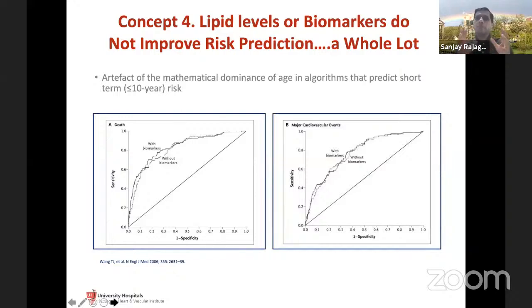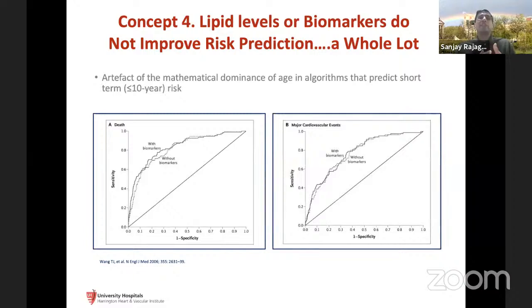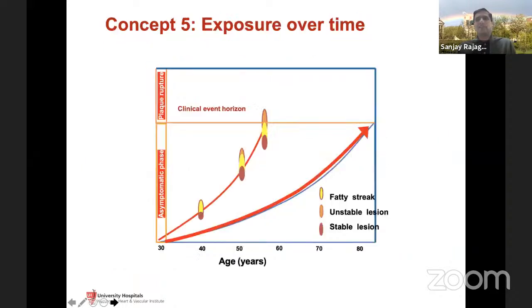The fourth concept: biomarkers don't make a huge difference. Whether you use five, six, or ten biomarkers — looking at the C-statistic or area under the ROC curve — even combining traditional risk stratification (ACC/AHA scoring including age, LDL cholesterol, smoking, diabetes) with biomarkers like troponin and CRP doesn't meaningfully change predictive accuracy. What really does change things is CT coronary calcium scoring, or CT angiography incorporating coronary calcium.